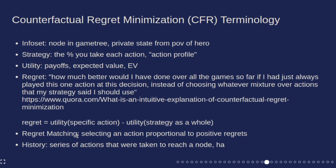Before the pseudocode, let's clarify some terminology. Nodes in the game tree are technically called information sets or info sets, because you don't know which state the opponent is in or what cards they hold. I'll use 'node' and 'info set' interchangeably. Strategy means the percentage you take each action—also called the action profile—so for example fold 10% of the time, call 80%, raise 10%. Utility is essentially synonymous with payoffs at terminal nodes, and I'll use it interchangeably with expected value.